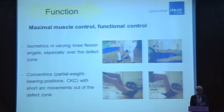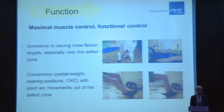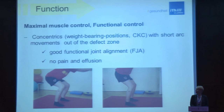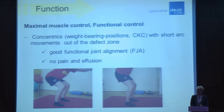To fulfill the requirements of this patient group, continue with isometrics using resistance in varying knee flexion angles, then progress to concentric exercises in partial weight-bearing and closed kinetic chain positions. Start with short arc movements not over the full range and out of the defect zone, then increase the load. When putting patients in weight-bearing positions, start with short arc movements out of the defect zones, and once standing, ensure good functional alignment with no pain or effusion during exercises.